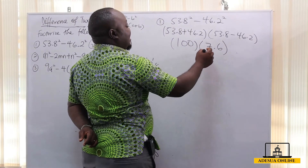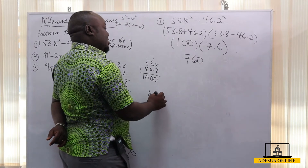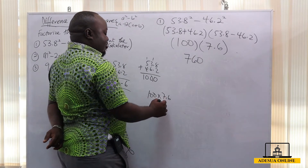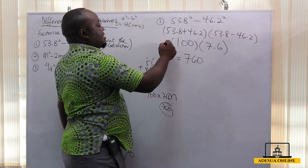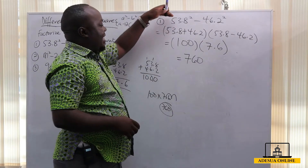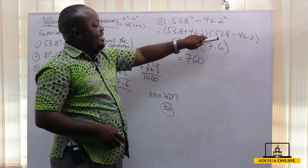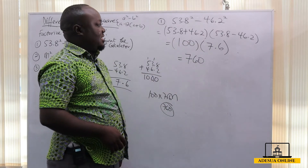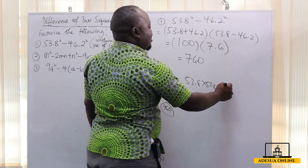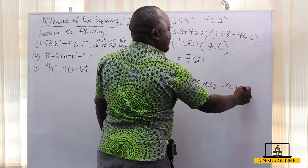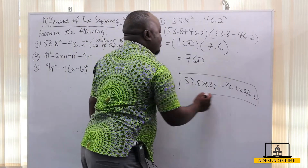So we have 100 times 7.6, which means we move the decimal point to the right twice, so this becomes 760. Our final answer is 760. If you were to solve it as 53.8 × 53.8 minus 46.2 × 46.2 using a calculator, we would mark you wrong. This is the right method — solving it using the difference of two squares.